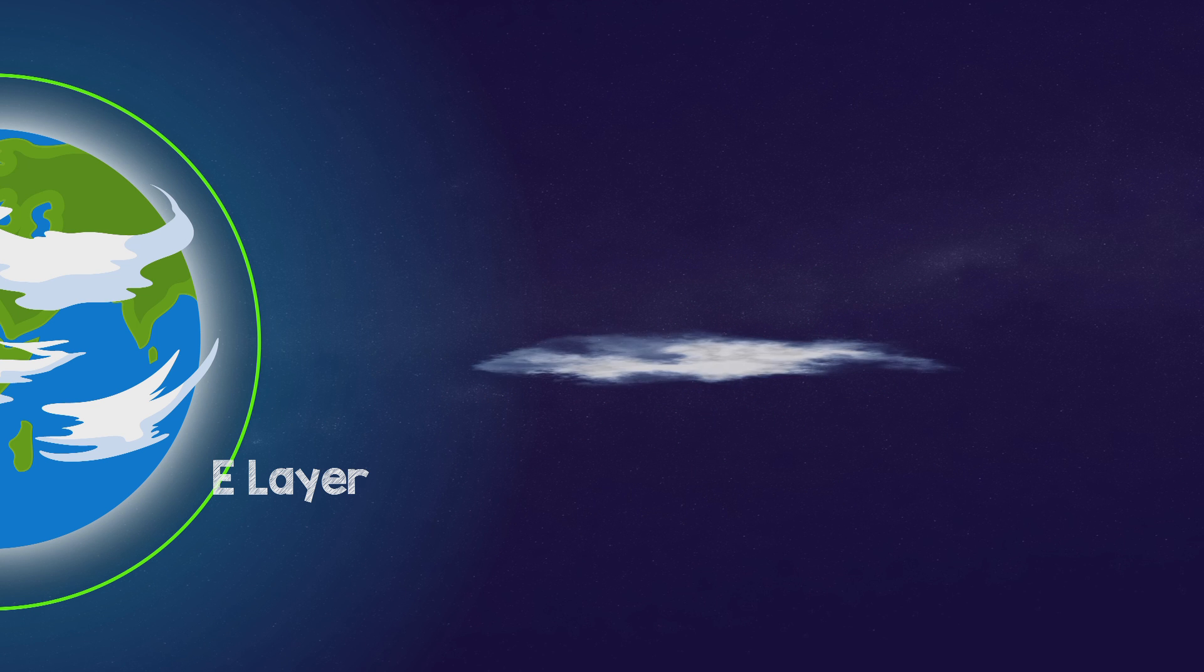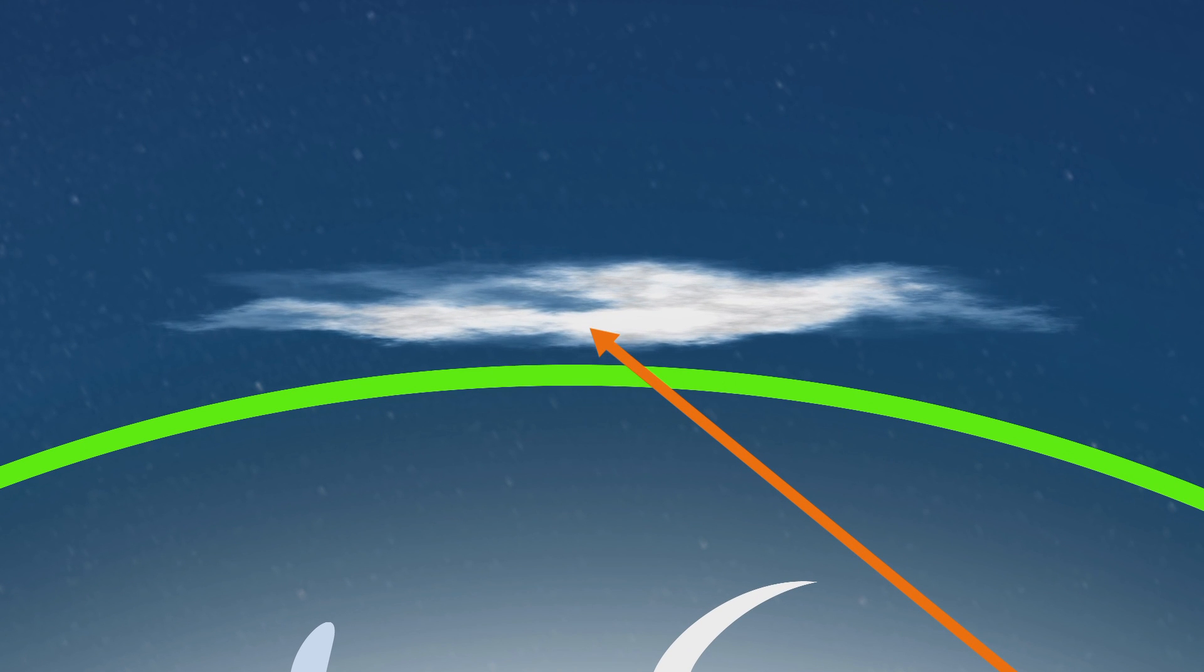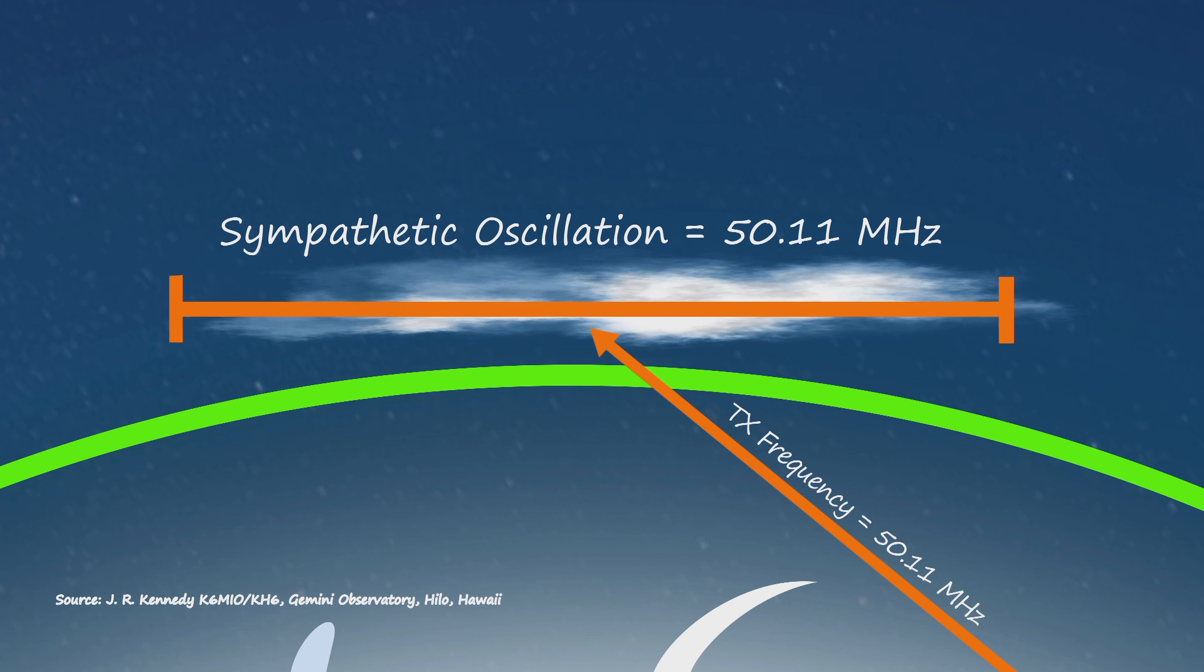When a skyward radio wave reaches the ionosphere, the electric field in the wave forces the electrons in the cloud into a sympathetic oscillation at the same frequency as the radio wave.